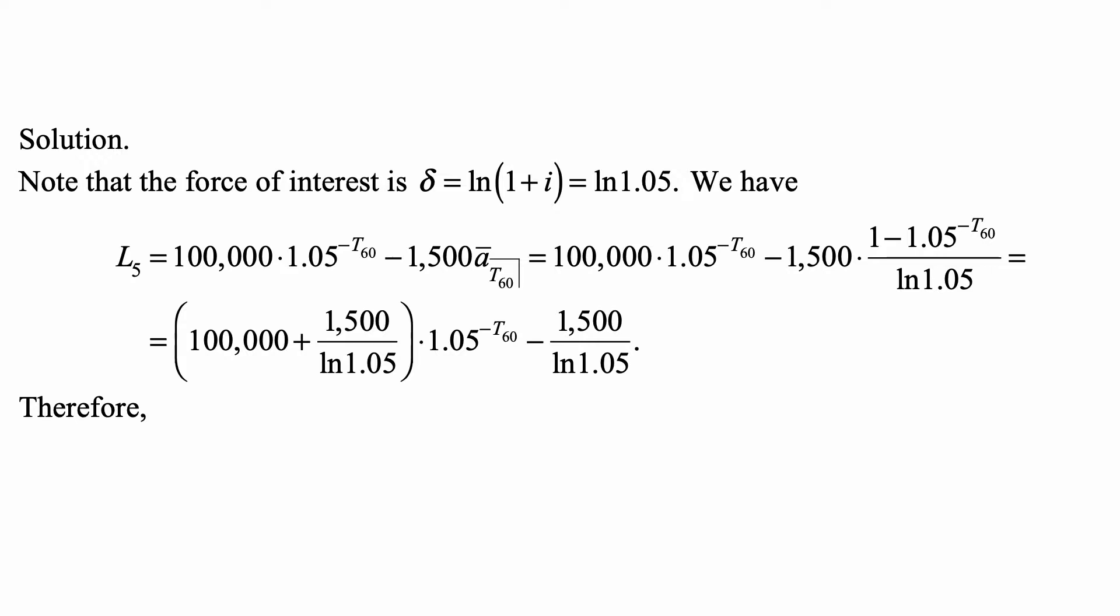Then we can rewrite this as (100,000 + 1,500/ln(1.05)) times 1.05 to the minus T₆₀ minus 1,500/ln(1.05).